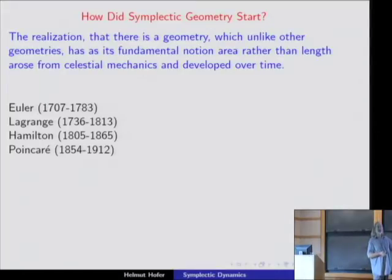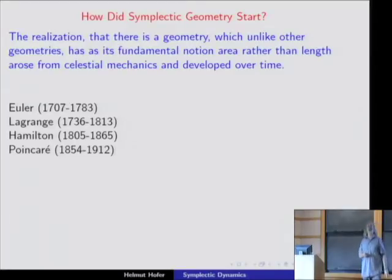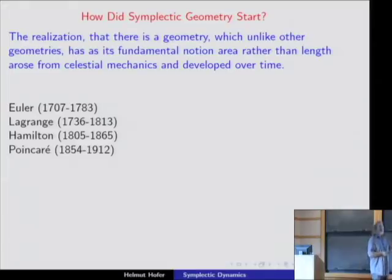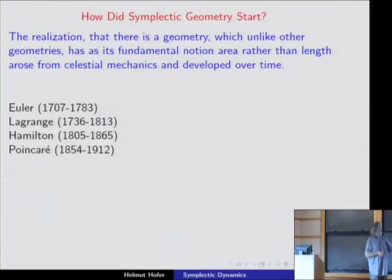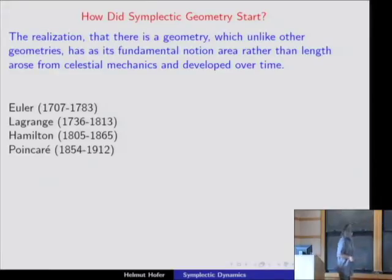Lagrange was actually the first to found Hamiltonian systems. Alan Weinstein found that Lagrange was the first who wrote the motion of the planets in what we would call today Hamiltonian form. If somebody knows what Hamiltonian invention was named after, Poincaré would be thankful — unfortunately, nothing was found here.